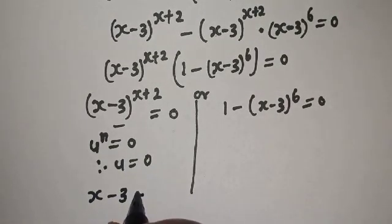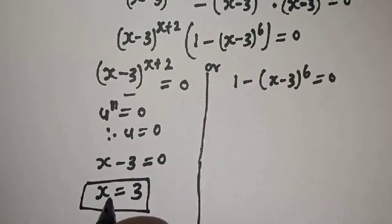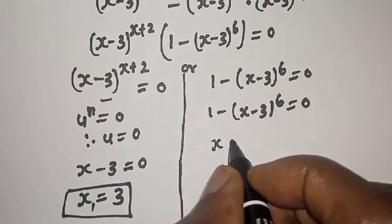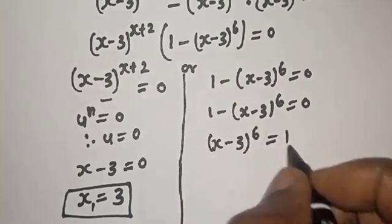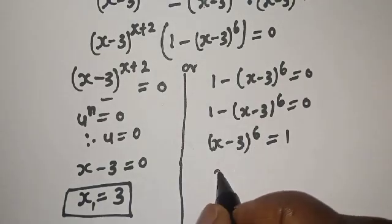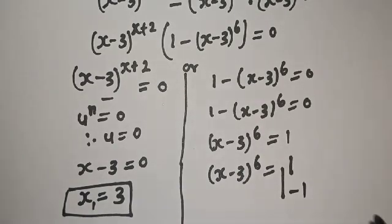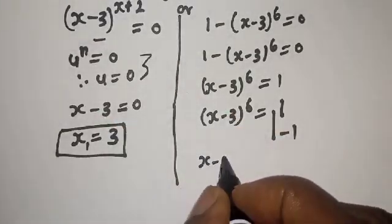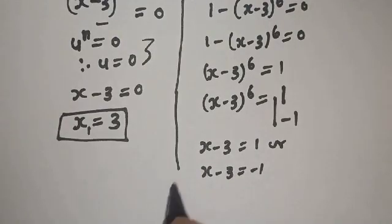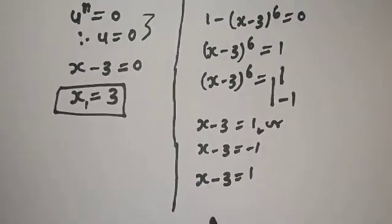This equals 0. Let's call this case s1. From the second case, following the same rule, x minus 3 raised to the power 6 equals 1. Since this is raised to power 6, which is positive, x minus 3 raised to power 6 equals 1 or negative 1.